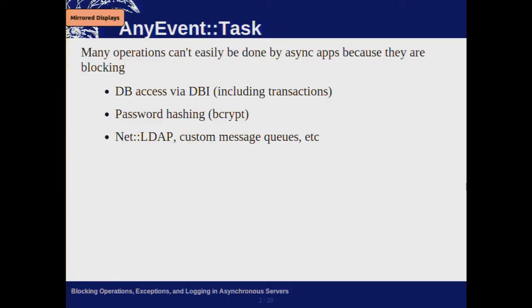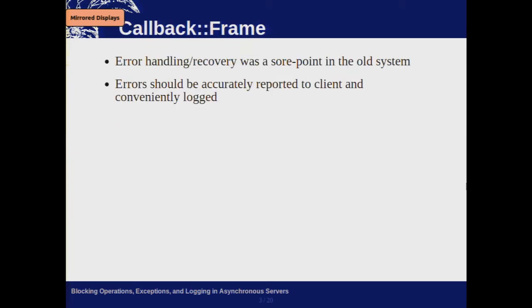First module is AnyEvent::Task. Essentially it's a worker pool implementation so that your asynchronous program can perform blocking operations. Here are some examples of blocking operations we needed in this server: database access, which is a problem because DBI doesn't necessarily have an asynchronous interface; bcrypt, which uses CPU and therefore you can't do it in an event-driven way without blocking; and a whole bunch of other random interfaces that didn't have asynchronous interfaces.